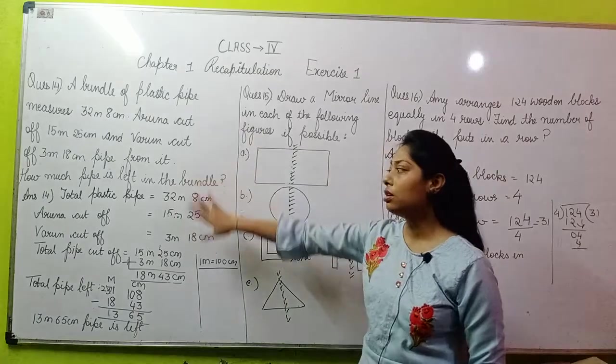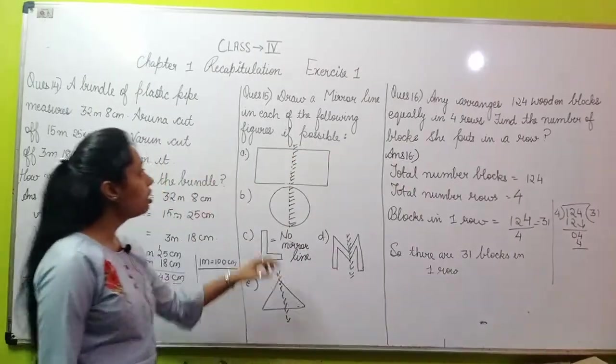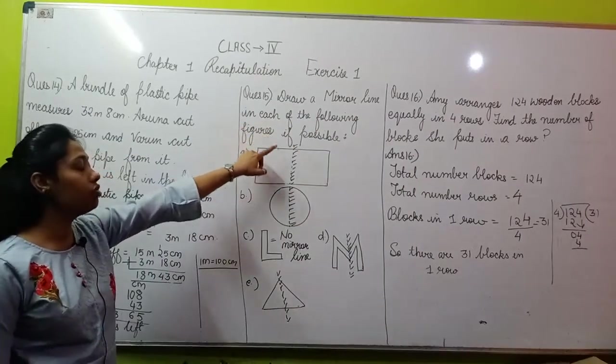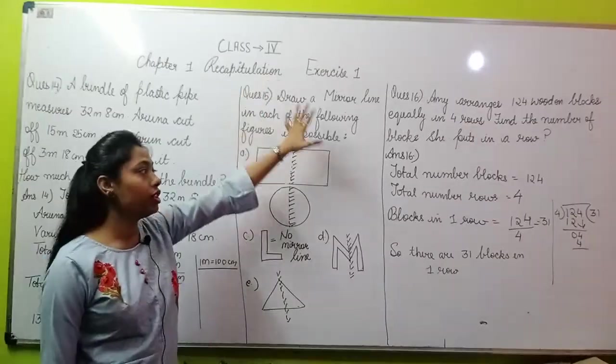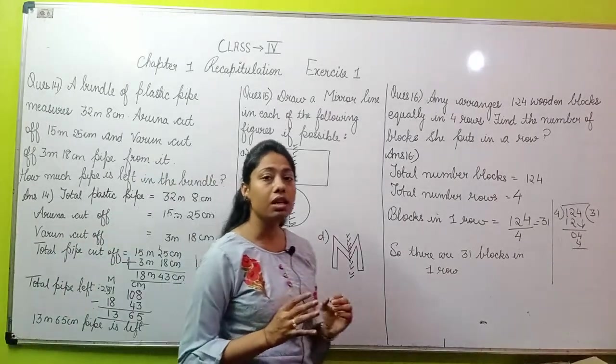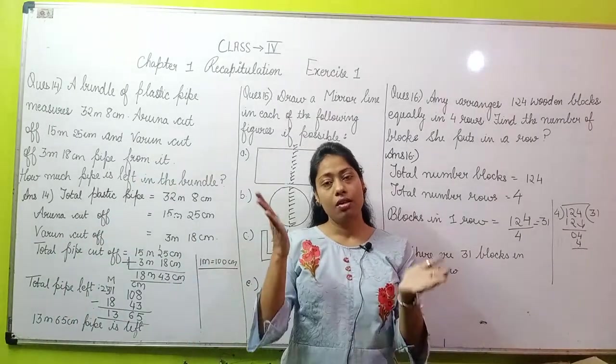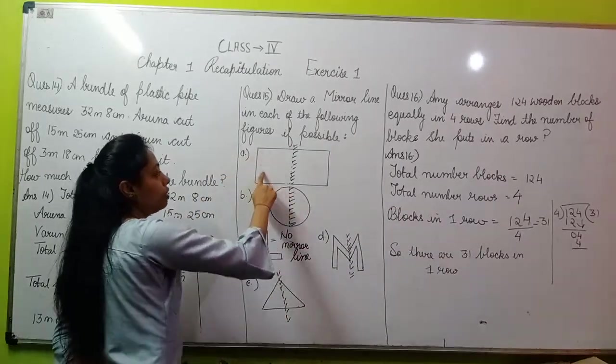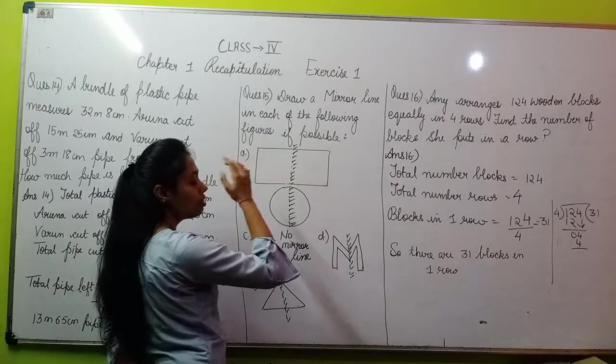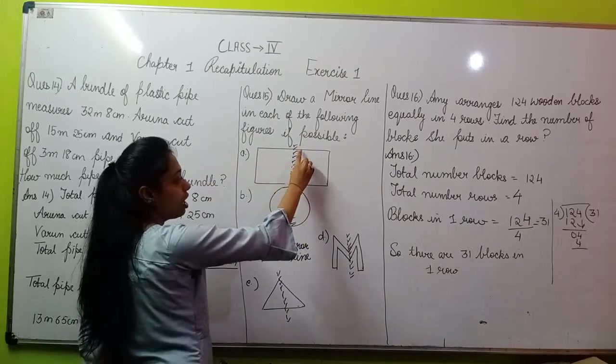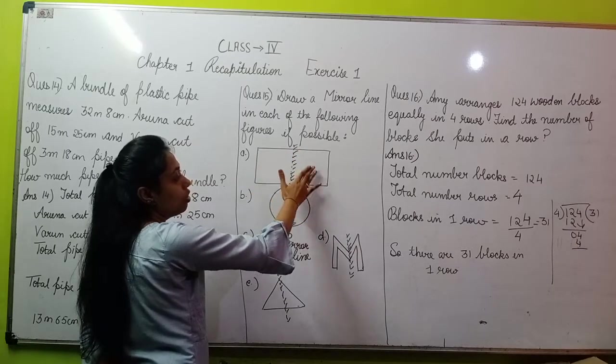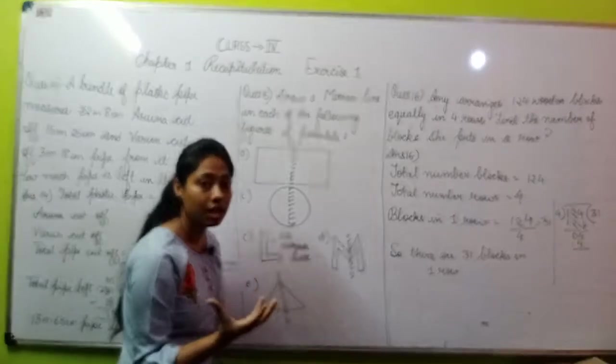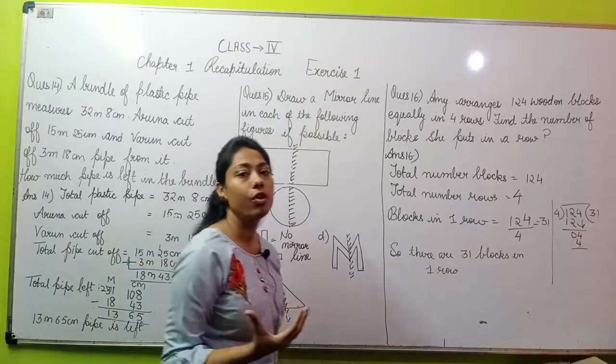This was your question number 14. Moving to the next question. Question says draw a mirror line in each of the following figures if possible. You have to make a mirror line in these figures. What is a mirror line? One where both parts look equal or the same. Like in (a), there is a rectangle. If I make a mirror line here, then both parts will become equal. And if the mirror is here, then these two will also look the same. Looking the same is important for a mirror line.